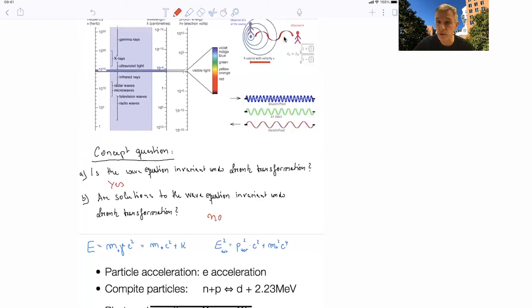However, the solutions of the wave equation, light itself, is not invariant under Lorentz transformation. We've just discussed redshift and blueshift, which means that the wavelength and frequency of light changes with respect to the observer or for each observer. So solutions, light, are not invariant under Lorentz transformation.